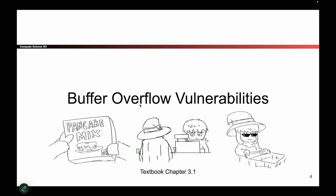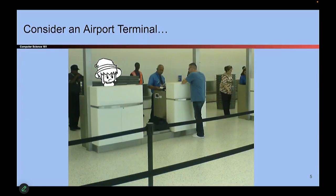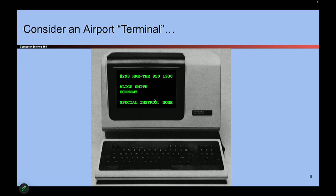Let's start with an analogy to get our minds thinking about what it looks like to have a buffer overflow in C code. Has anyone been to an airport lately? Airports sometimes use really old computers at their check-in counters. What happens is if you go to one of these old airport terminals, it loads a ticket you submitted — your name, the class you're in (economy or first class), and any special instructions. It looks like a very old school computer.